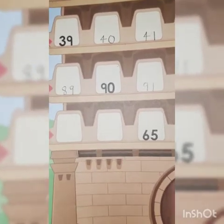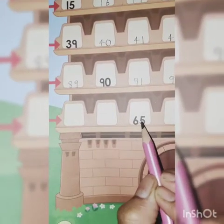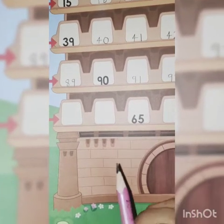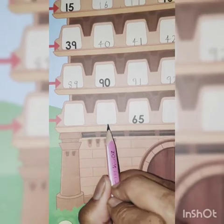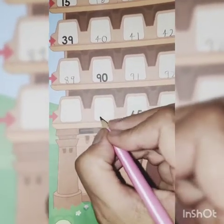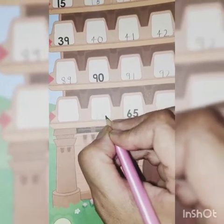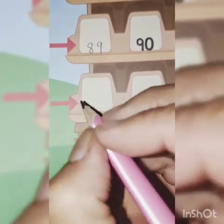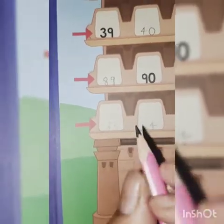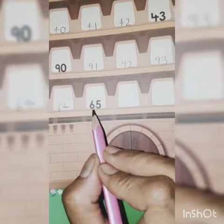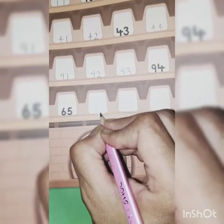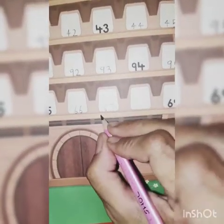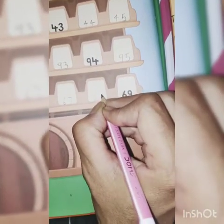Come to the fifth row. Here we have two blank boxes. We have one number: 65. What comes before 65? 64 — write down 64 everyone. What comes before 64? 63. So: 63, 64, 65. Then 66, 67, 68, 69. Complete.